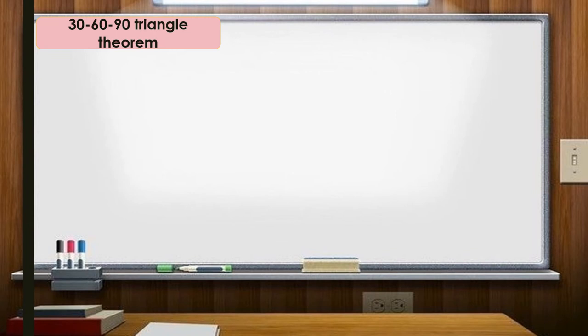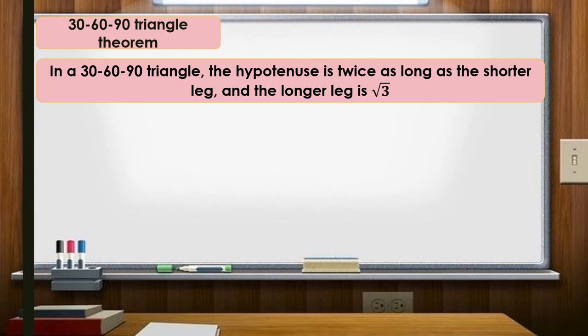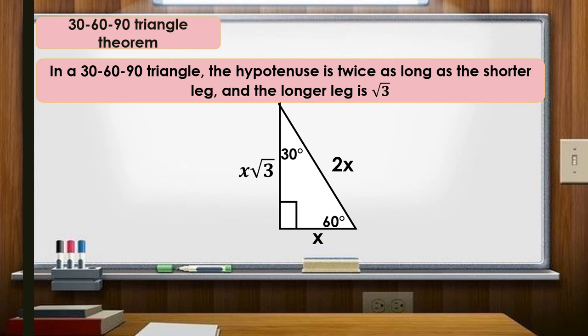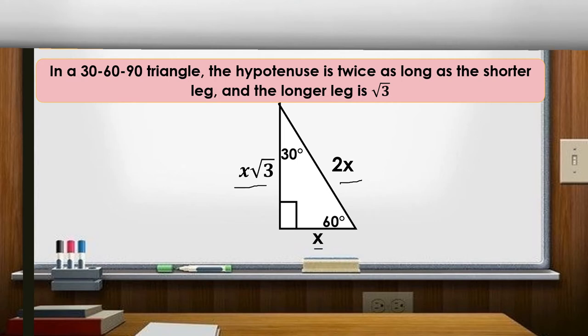The 30-60-90 triangle theorem: in a 30-60-90 triangle, the hypotenuse is twice as long as the shorter leg, and the longer leg is √3 times the shorter leg. In the diagram, the shorter leg is x, the longer leg is x√3, and the hypotenuse is 2x. A triangle is 30-60-90 if it has angles of 30°, 60°, and 90°.